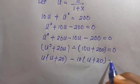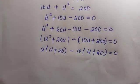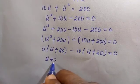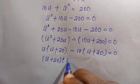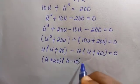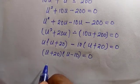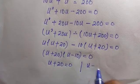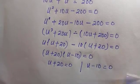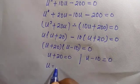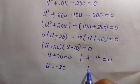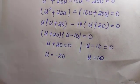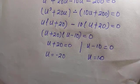For the first group, we take out U giving U bracket U plus 20; for the second group, we take out 10 giving 10 bracket U plus 20. Combining these together, we have U plus 20 bracket times U minus 10 equals 0. Therefore U equals minus 20 or U equals 10 — these are the two roots of the quadratic equation.